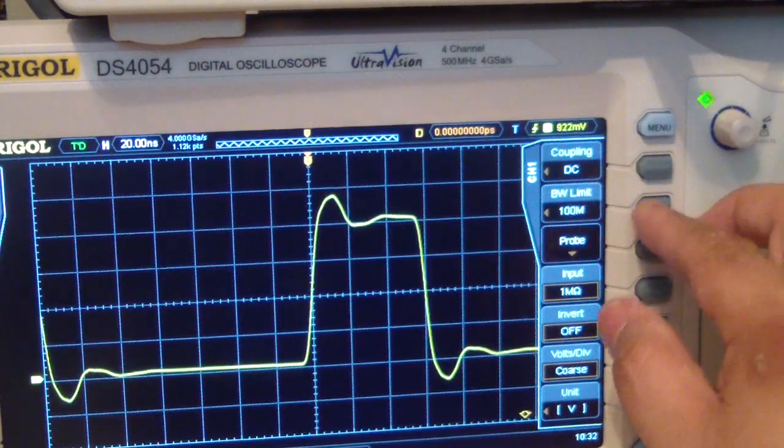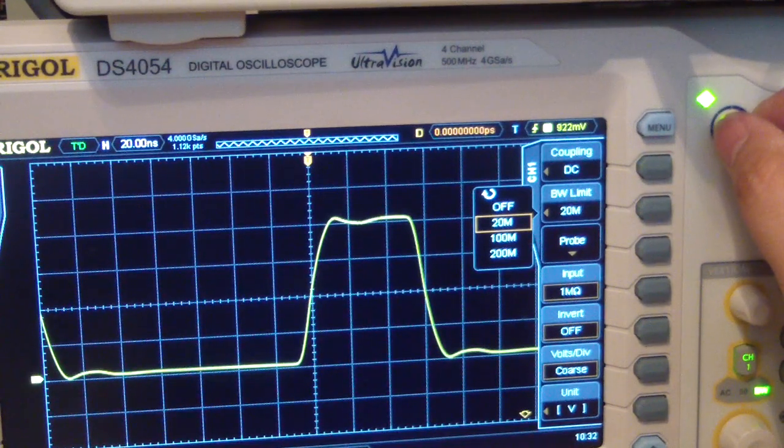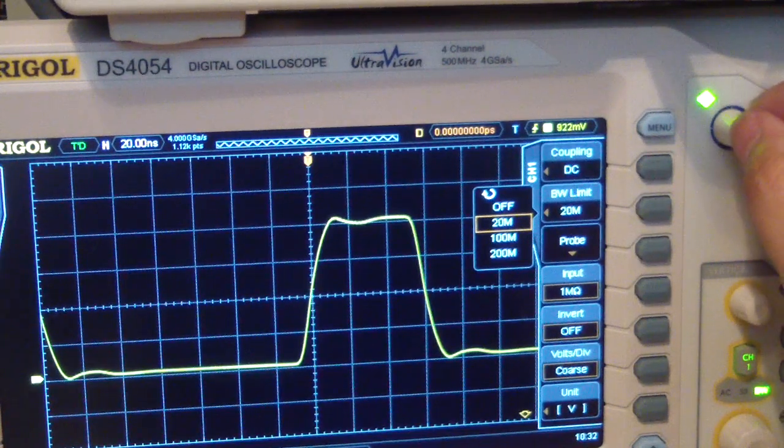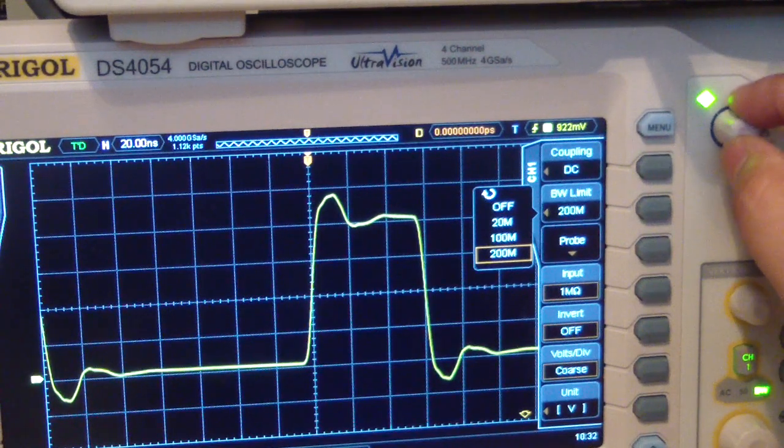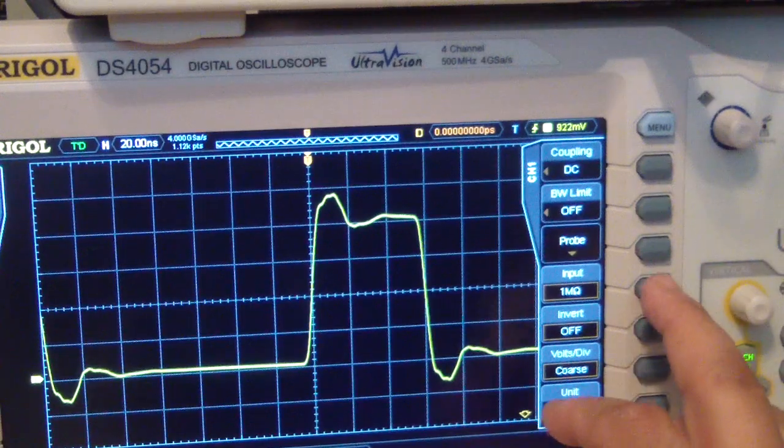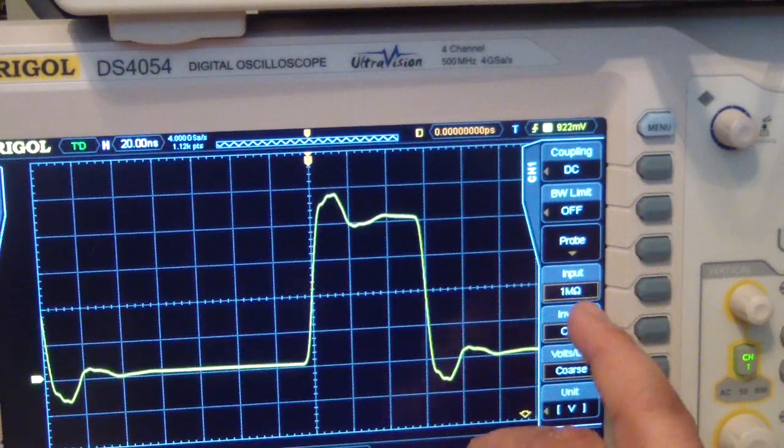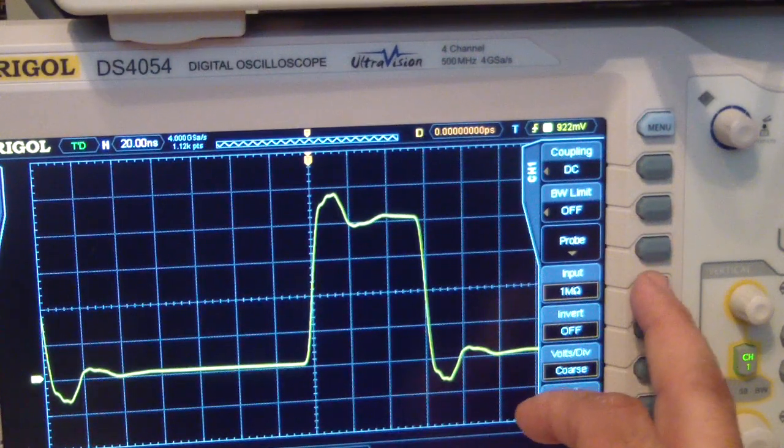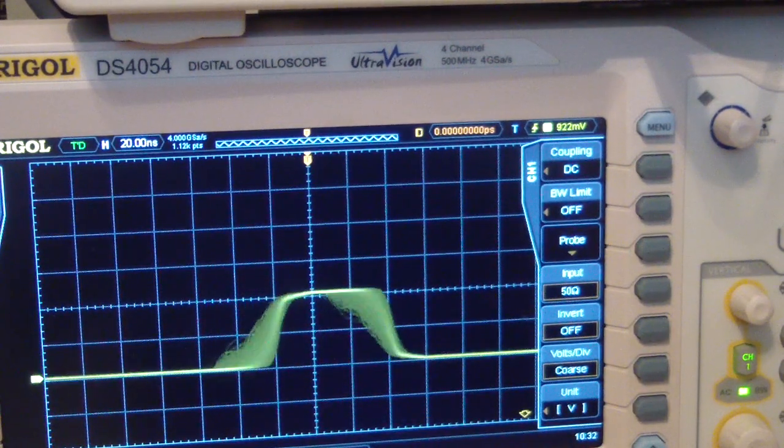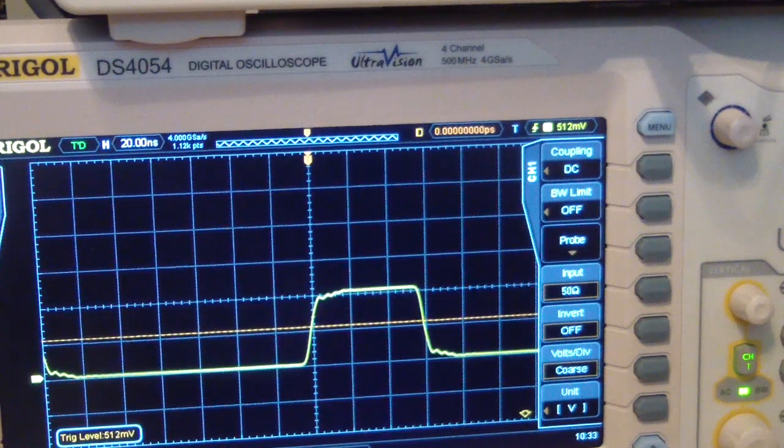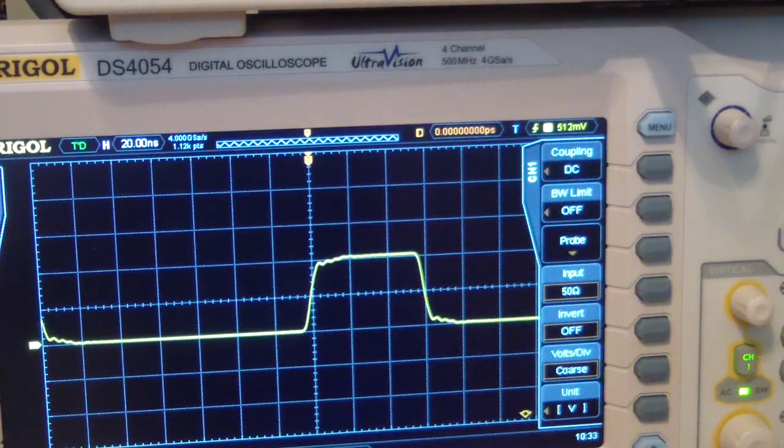The second option is the bandwidth limit. You can turn it off, or set it to 20, 100, or 200 megahertz, which is a nice feature. Another nice feature is the input impedance - you can set it between one megaohm or 50 ohms. The triggering changed, but we got it triggered now. Waveforms look nice and bright.